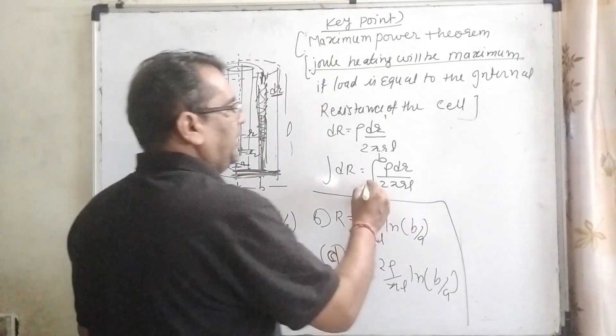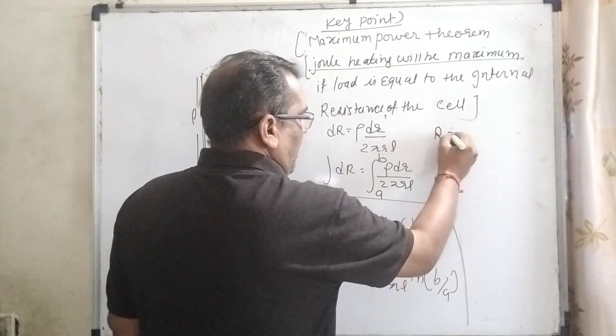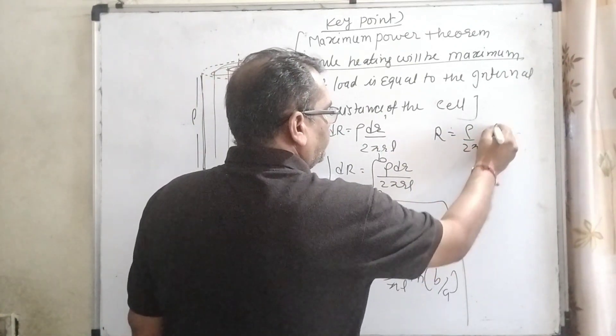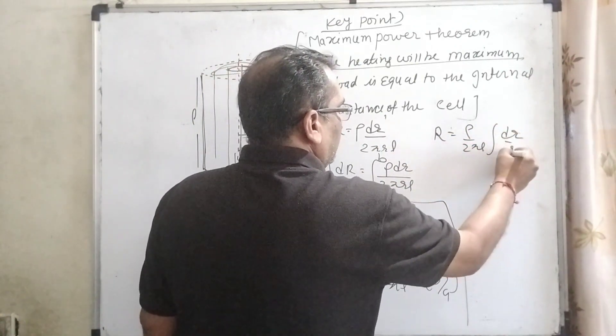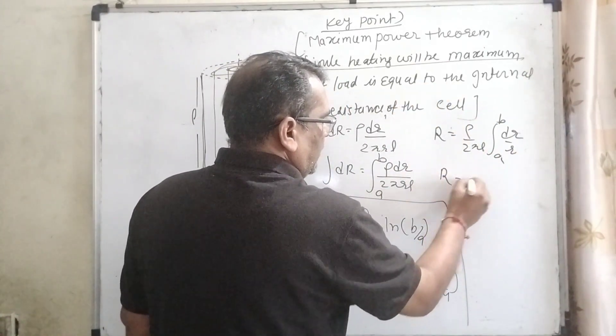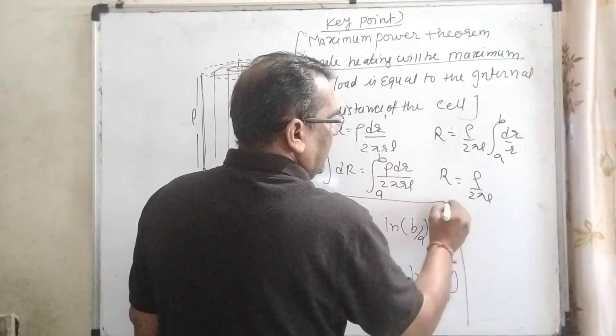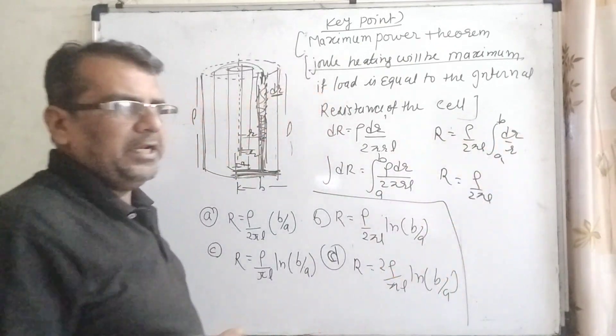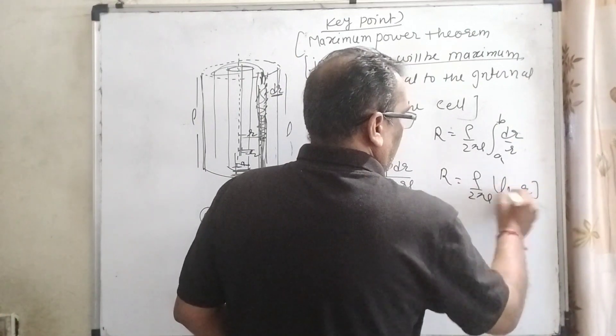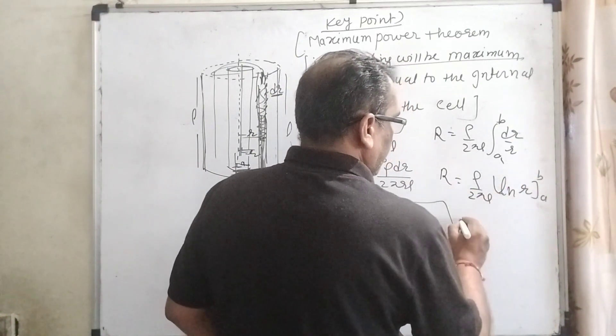So now we have to integrate. R equals... rho and 2πL get common. The integral is dr upon r, upper limit is B, lower limit is A. Now R equals rho by 2πL. What is the integration of dr by r? It is ln(r), upper limit is B, lower limit is A.